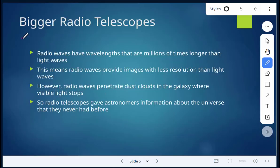So building on those concepts, scientists began to build bigger radio telescopes and explore further. So radio waves have wavelengths that are millions of times longer than light waves. This means that radio waves can provide images with less resolution than light waves.